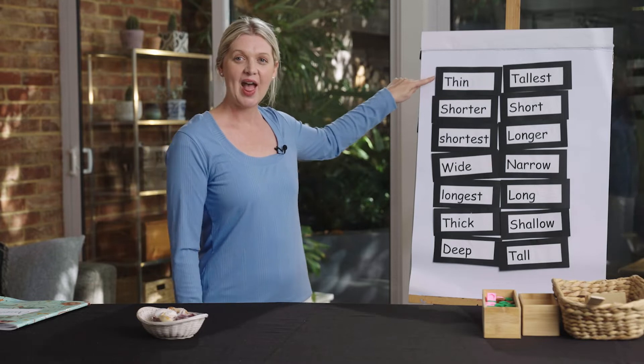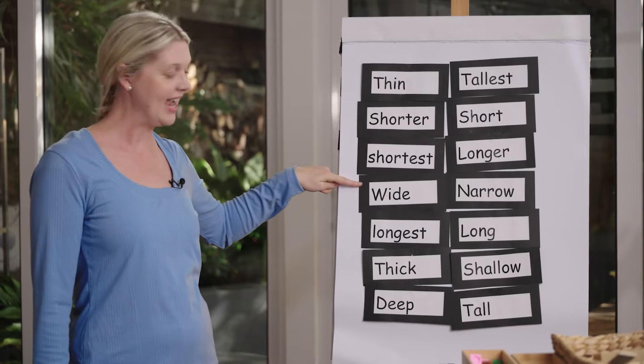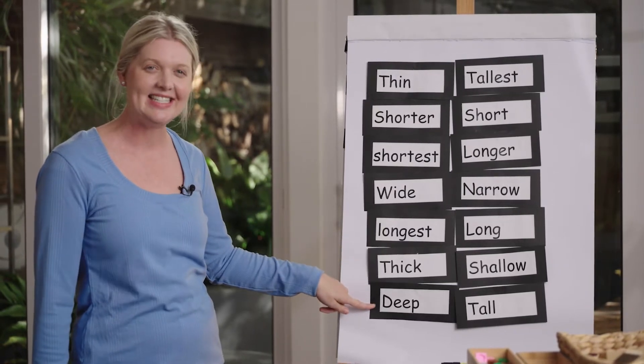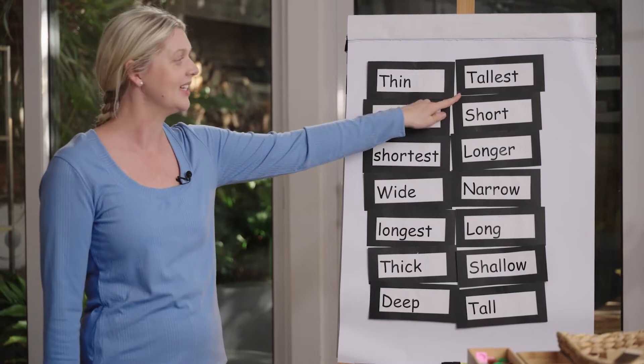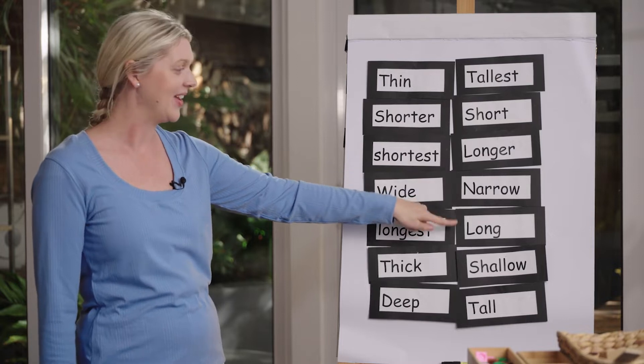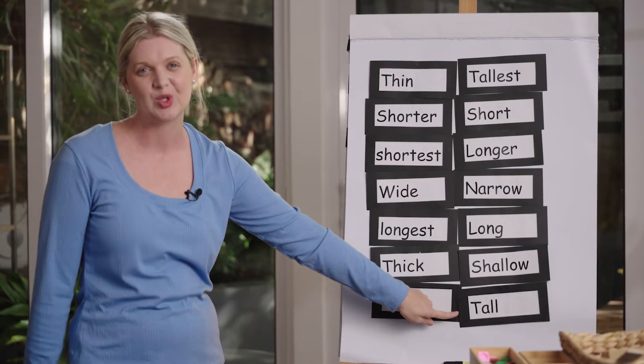Remember, we talked about the words that mathematicians might use when talking about the attribute of length. We could use words like these: thin, shorter, shortest, wide, longest, thick, deep, tallest, short, longer, narrow, long, shallow, and tall.